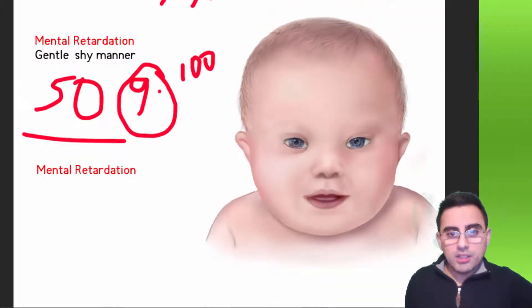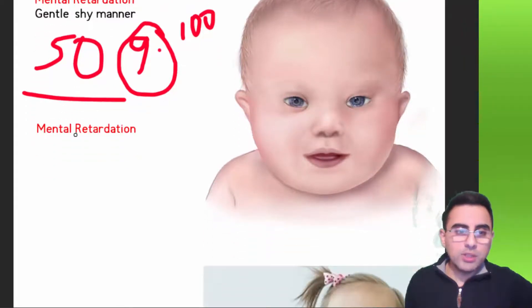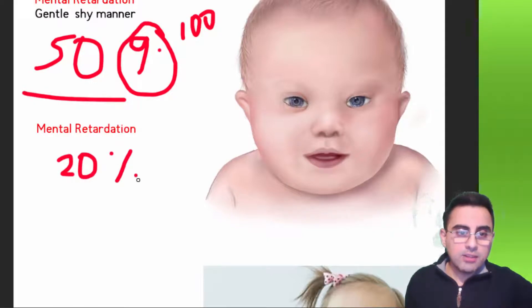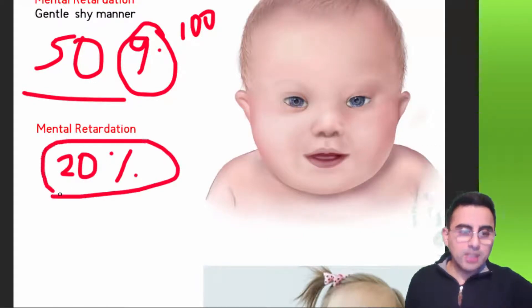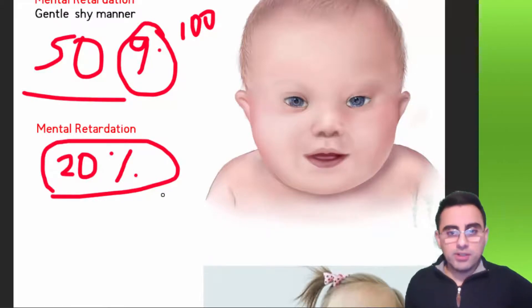Down syndrome individuals have a gentle, shy manner. Mental retardation is a very important fact, and they have restricted learning abilities. They cannot typically work in adulthood, and only about 20% of Down syndrome people in the USA can earn some money in adulthood, with even lower rates in other countries.